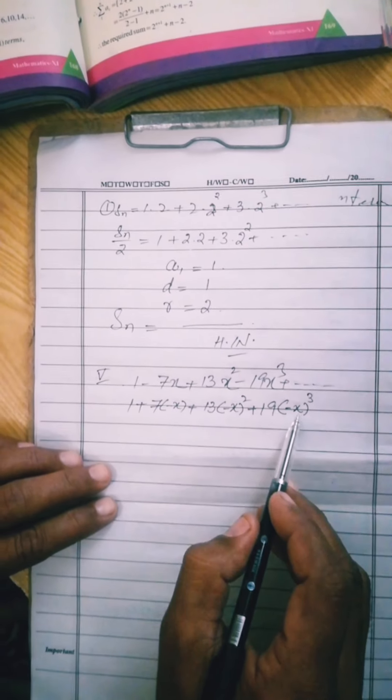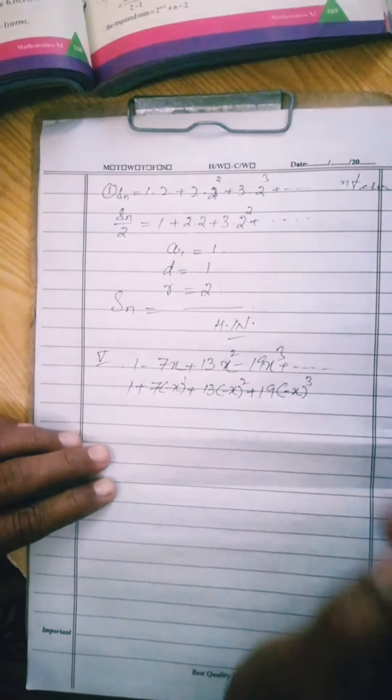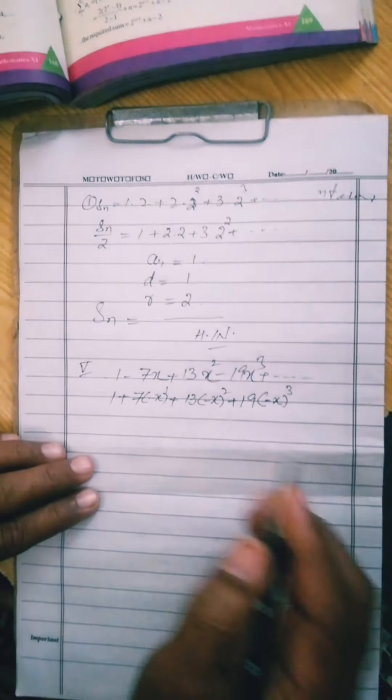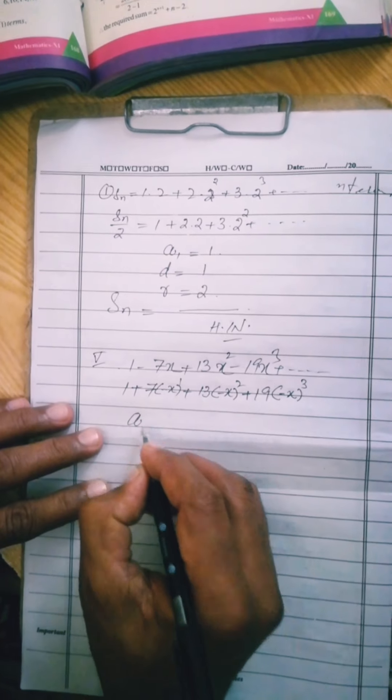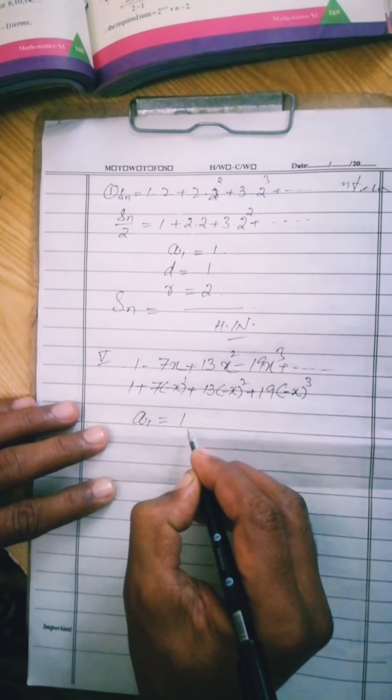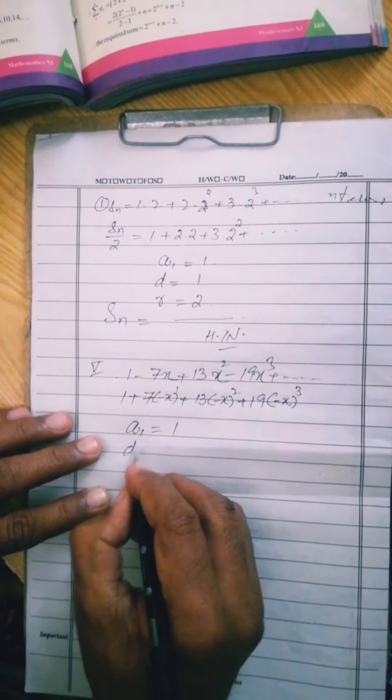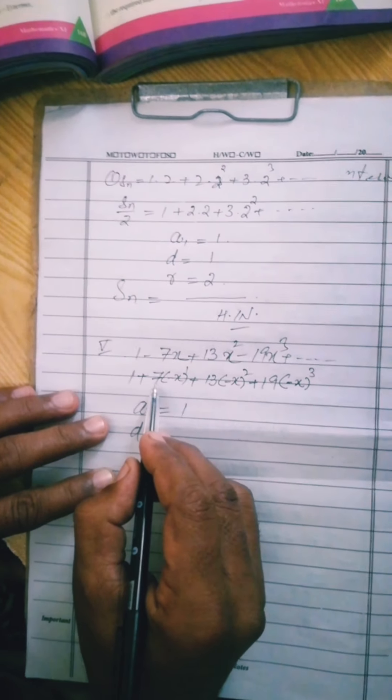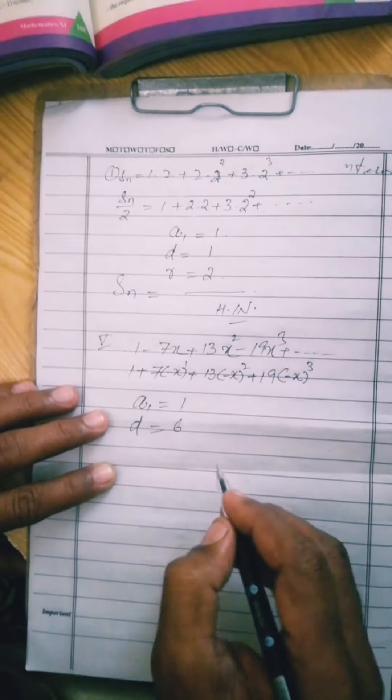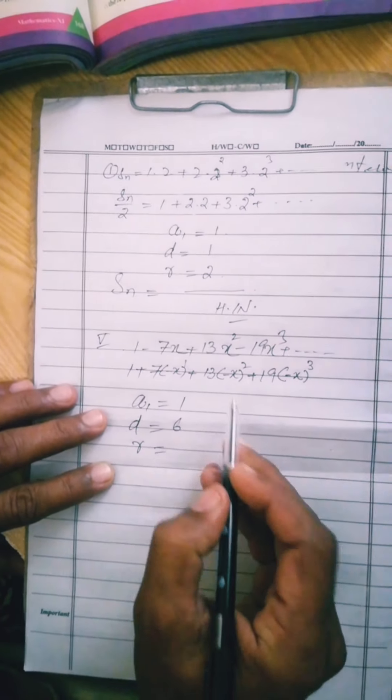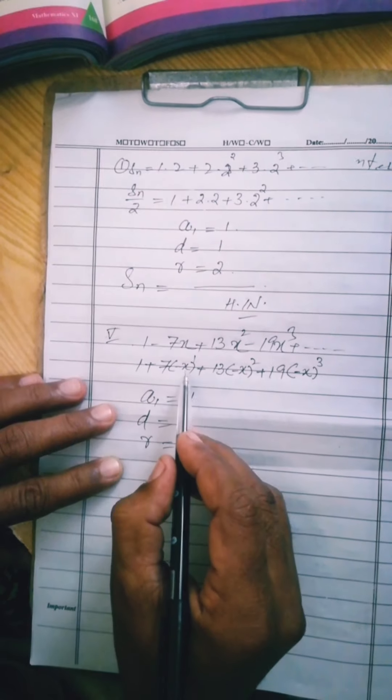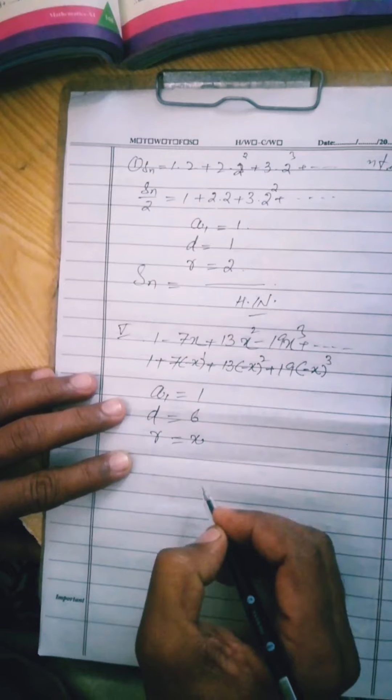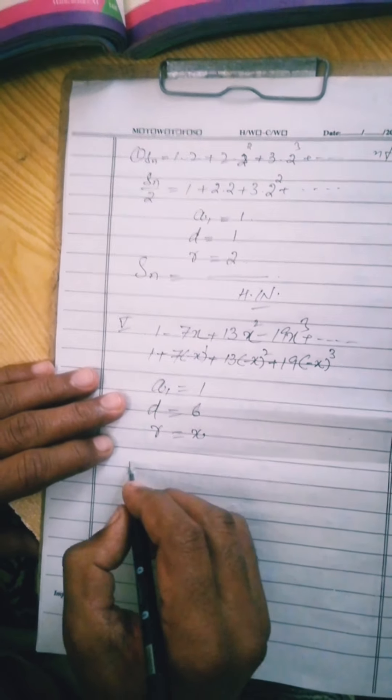And the coefficients 1, 7, 13, 19 and so on. So this is a1 or a, that is equal to 1. And d: 7 minus 1 is 6, 13 minus 7 is 6, so d is 6. And r: minus x square divided by minus x, minus minus is cancelled, x square by x is x. So r is minus x. Again put the formula of sn and do this as homework.